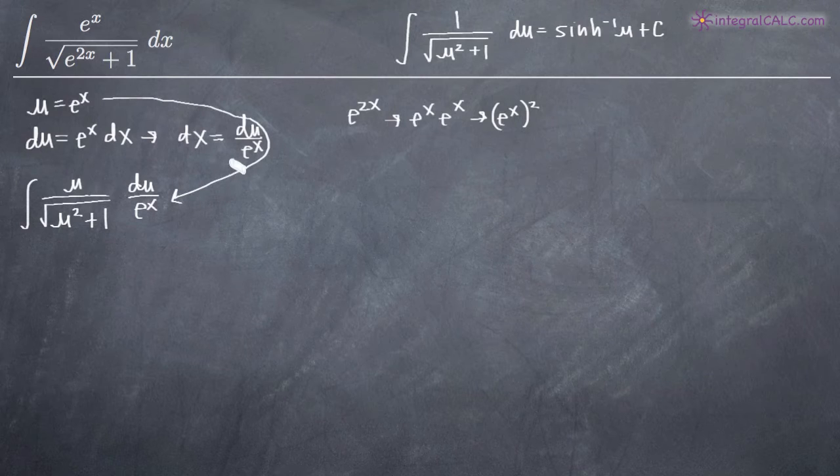What we need to remember is that we set u equal to e to the x in the first place. So even though it was left here in our equation with dx, we can change this e to the x into u, because u equals e to the x.